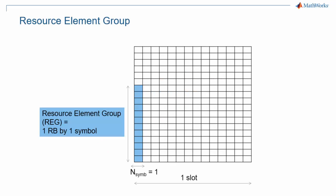To understand how downlink information is mapped to the 5G grid, we must introduce two new concepts. Resource element groups and control channel elements, or CCEs. A resource element group is simply a block of 12 resource elements by one symbol. This is the basic unit used to define CCEs.